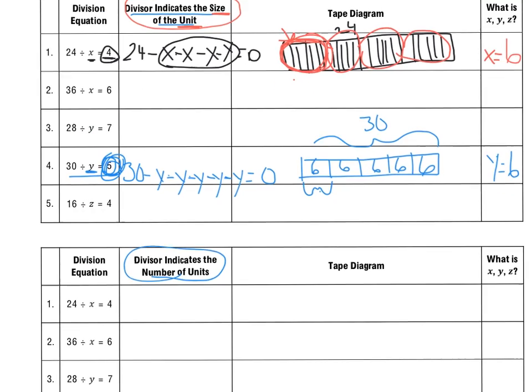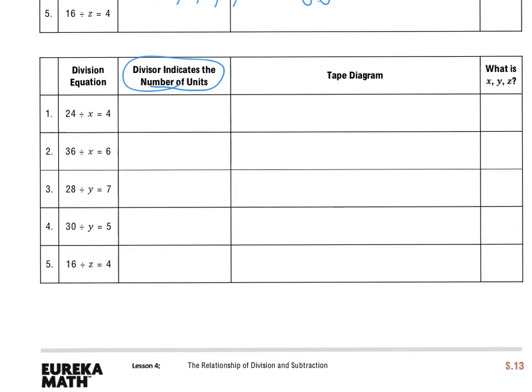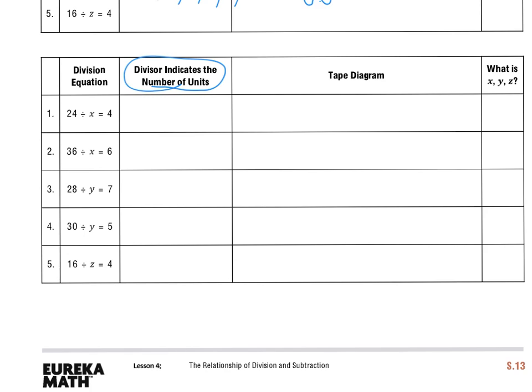Now, we're going to take a look further down at this next table. And we'll see the difference here. Because now, the divisor, my x, indicates the number of units. So we're trying to find how many groups of four make 24. So I'm still going to do a subtraction equation.